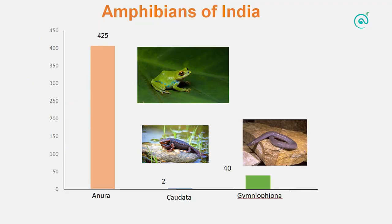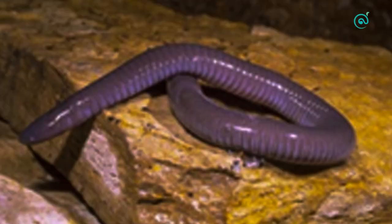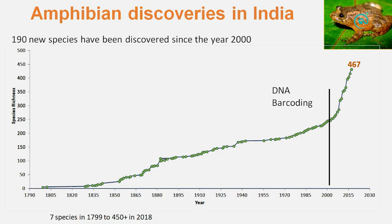Let me begin with a common slide that many of you have seen. India has a high diversity of amphibians. They are mostly frogs, which are around 425 as of now. The newts, belonging to order Caudata, which are 2 in number, and the order Gymnophiona, the caecilians, which are around 40. There has been a tremendous increase in species description beginning in the year 2000. Before that, there were descriptions like 7 species in 1799, but as of 2018, there are 450 species plus.